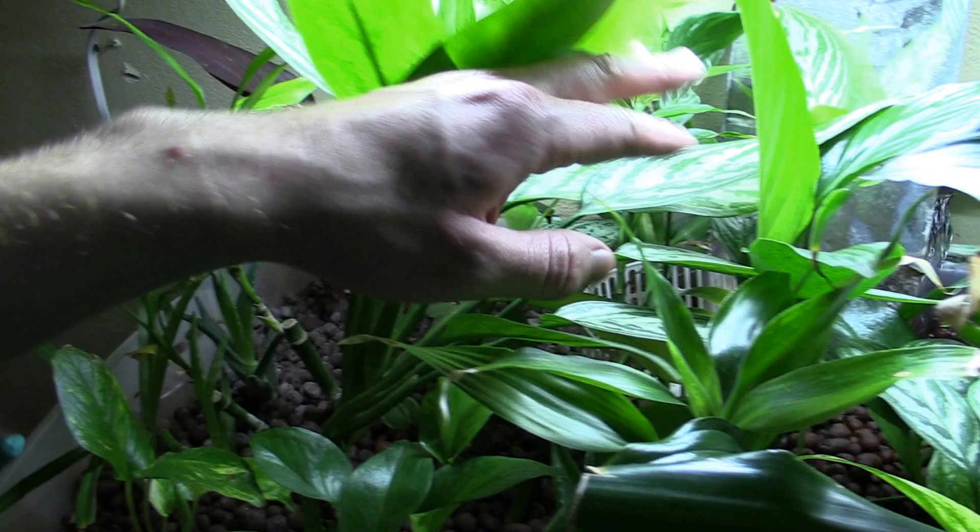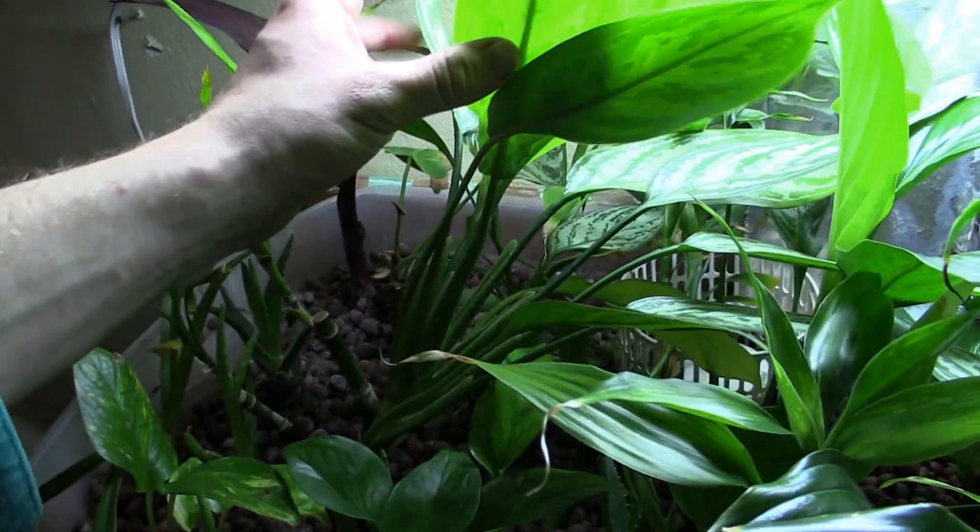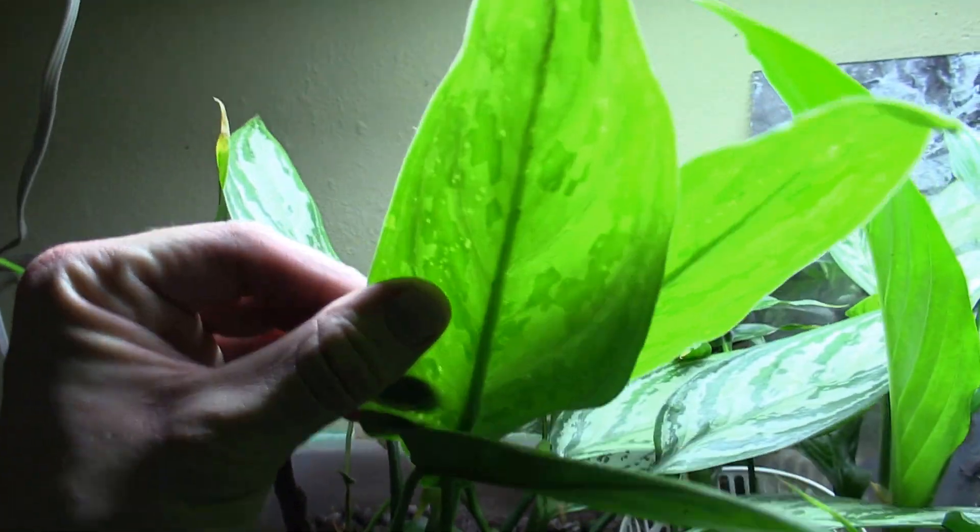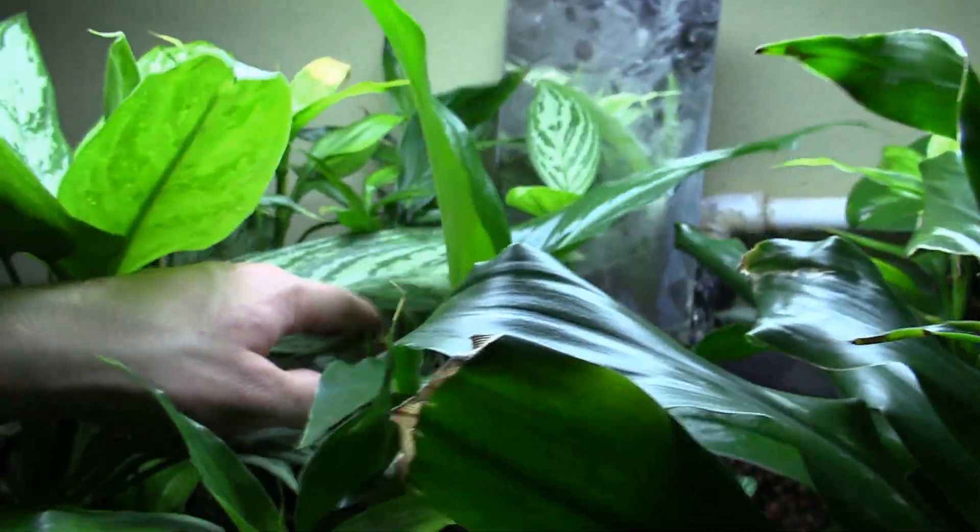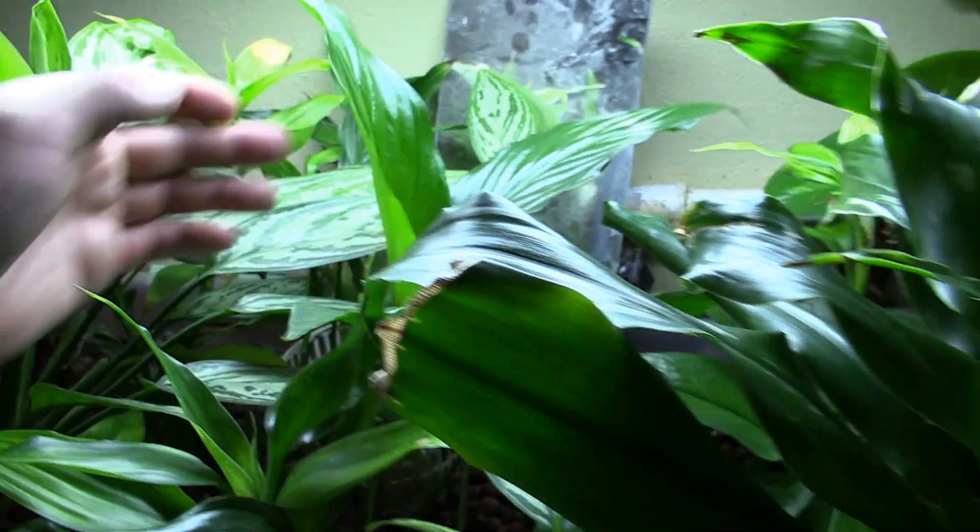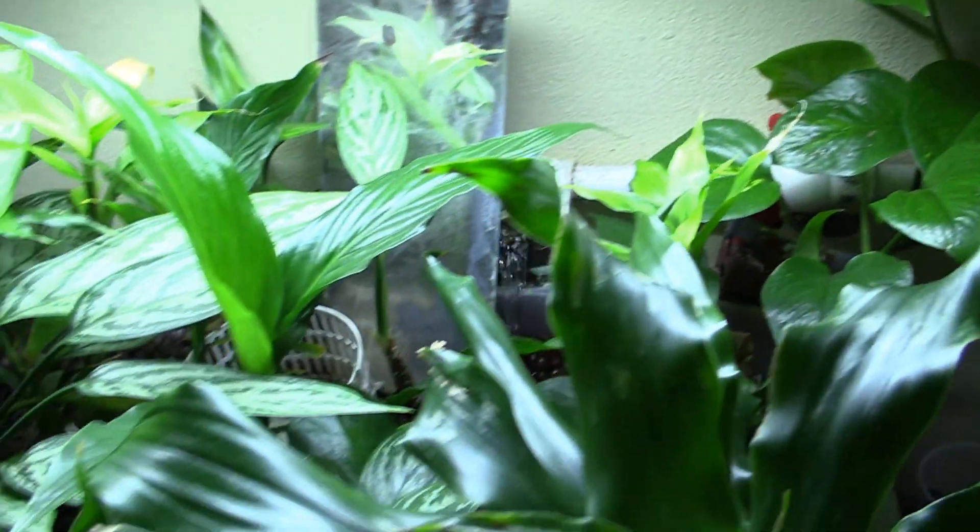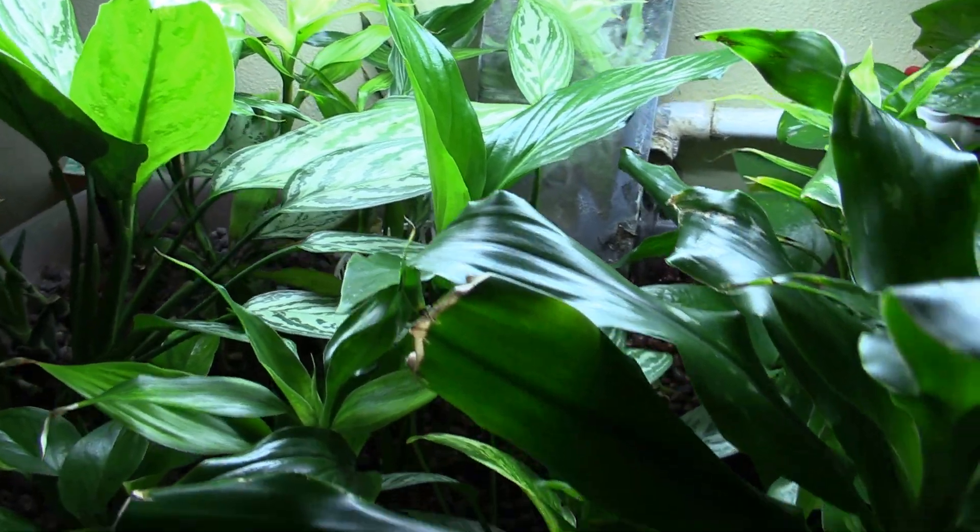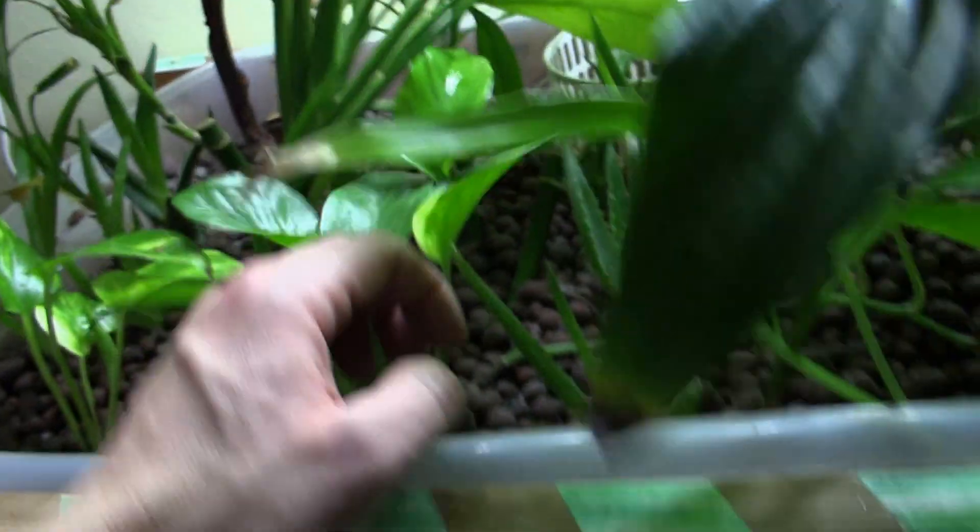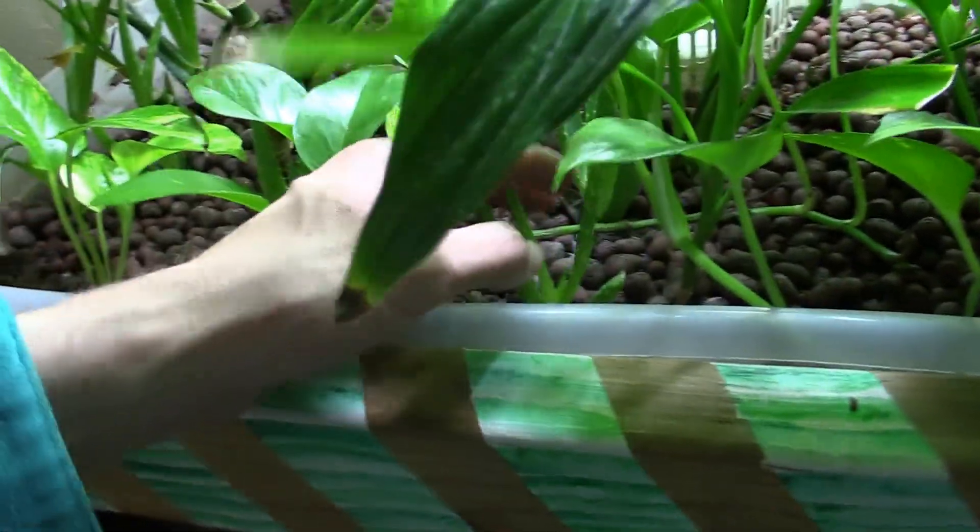This is Chinese Evergreen, it's got some kind of pest damage on there, probably more spider mites. Here is a Peace Lily, there is more Pothos, some more Lucky Bamboo, and who knows, maybe a few other things. Here is this aloe plant.